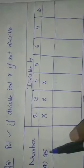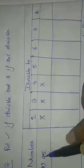Now, divisibility by 5. The ones digit is 5. The rule for divisibility by 5 is: if the ones digit is 0 or 5, the number is divisible by 5. Here the ones digit is 5, so 95 is divisible by 5 — put a tick. After that, divisibility by 6: the rule is if any number is divisible by both 2 and 3, it is divisible by 6. Here 95 is not divisible by 2 and not divisible by 3, so it cannot be divisible by 6 either — put a cross.